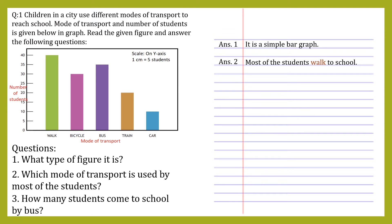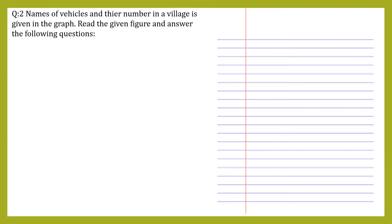Third question: how many students come to school by bus? The third rectangle with a purple color shows the number of students who travel by bus. The height of this rectangle corresponds to 35, as shown by the arrow pointing towards the y-axis. So the answer is: 35 students come to school by bus.